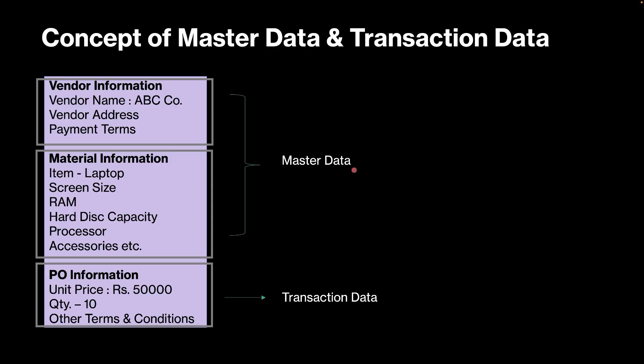Master data is something which is static — which once created will not be changed, or will rarely be changed. Transaction data is something which will depend on each transaction document. Whenever you create a purchase order, you will enter a vendor master, you will enter a material master, and then you will enter your transaction data. These two combined together will basically create your purchase order. Master data will rarely be changed — you create it once and keep using it in every purchasing document. Transaction data will depend on every case — whatever purchasing document you are creating, it will have its own transaction data.